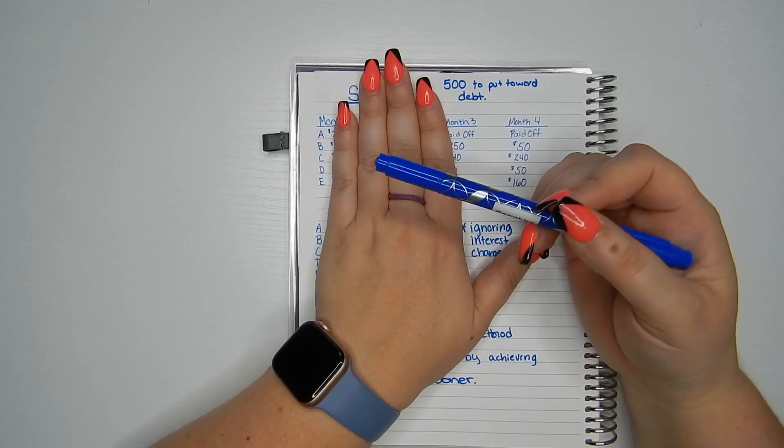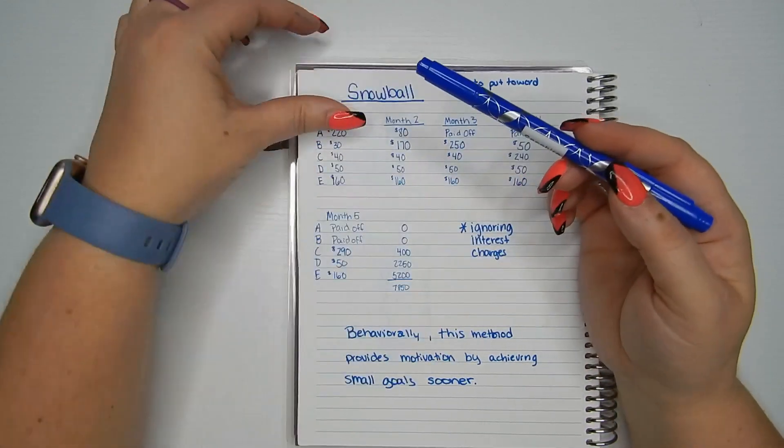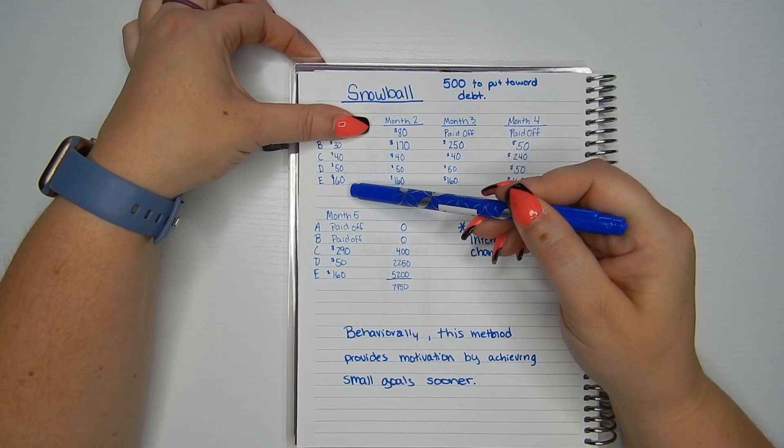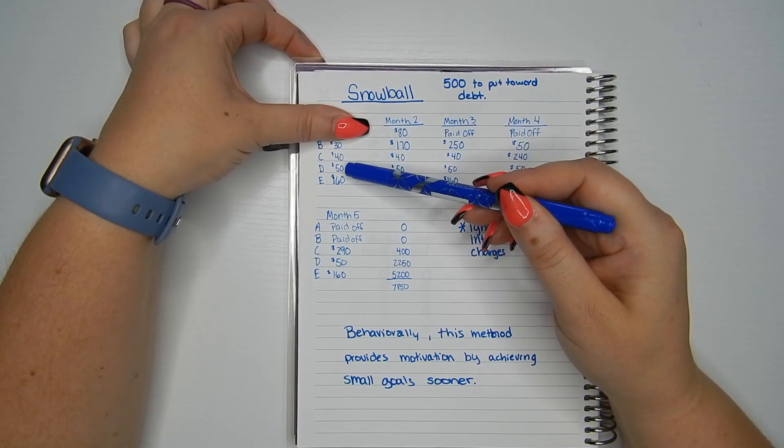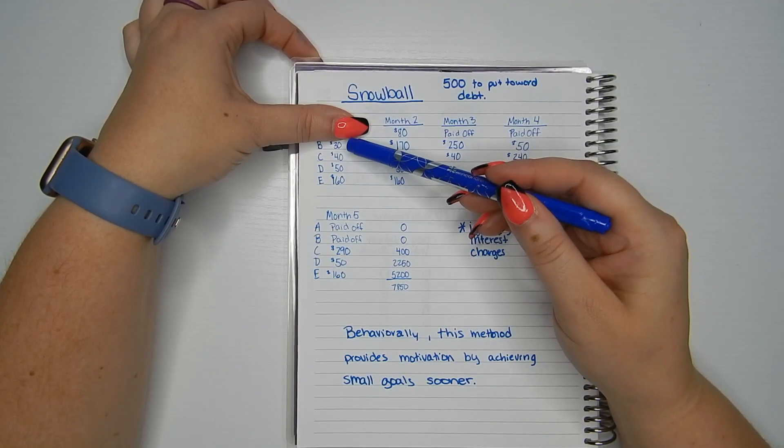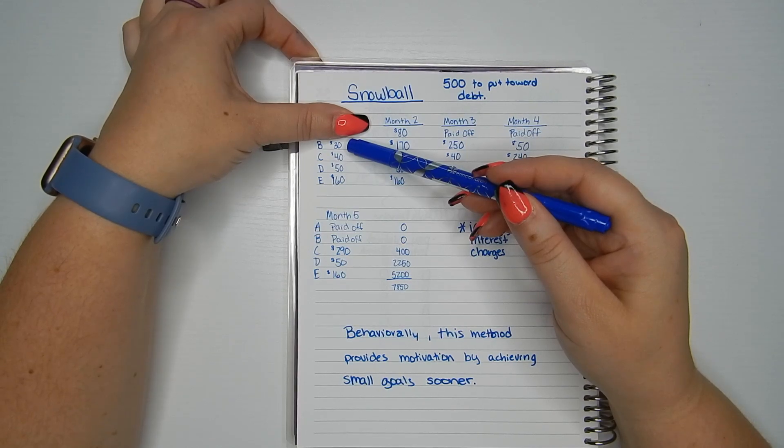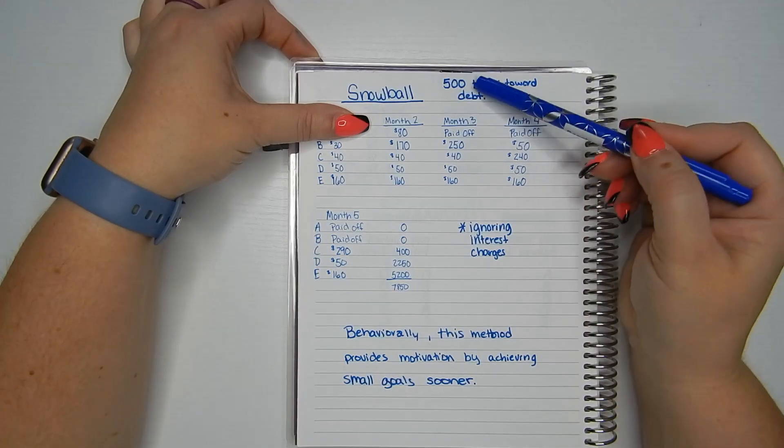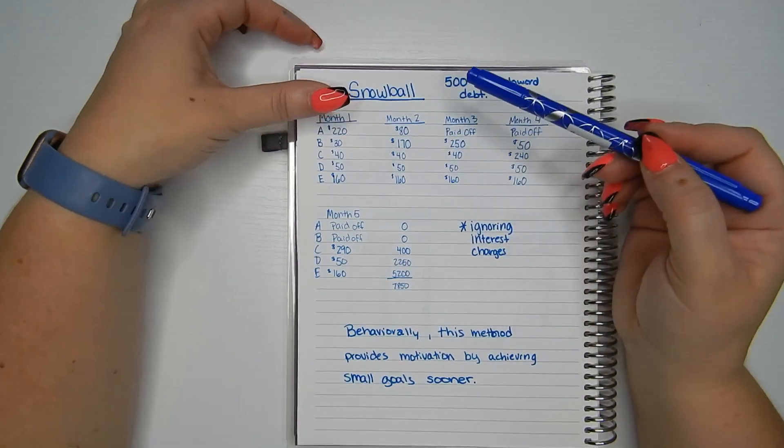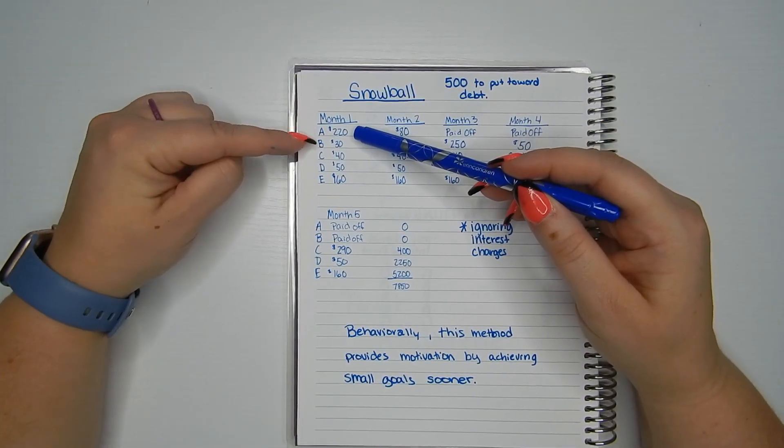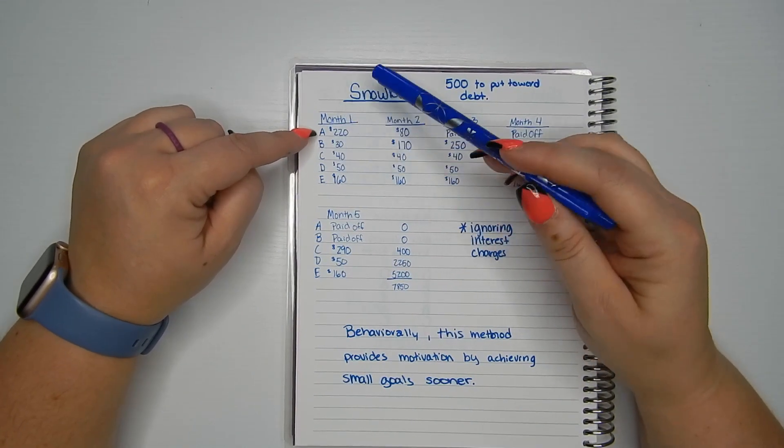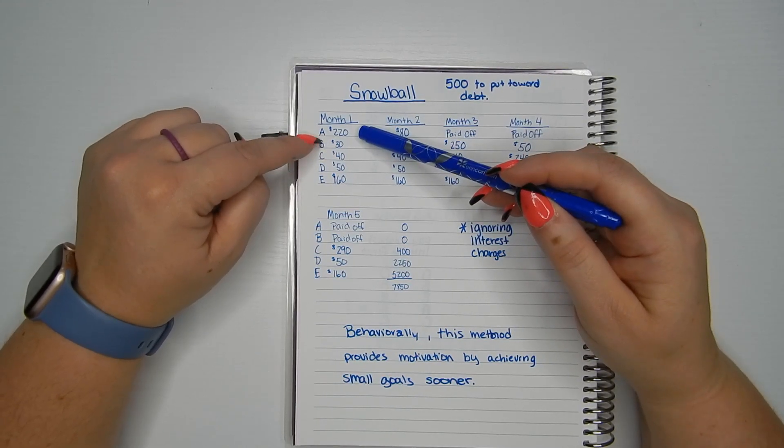And then I looked at the minimum balances for every card except A. So card E has a minimum balance due of $160, so I'm going to pay that. Card D has a minimum balance of $50. Card C has a minimum balance of $40. And card B has a minimum balance of $30. So I take all of that away from my $500 that I have available to pay towards debt. And what's left over is $220. So I'm going to put that $220 towards card A because that's the card I'm focusing on first.